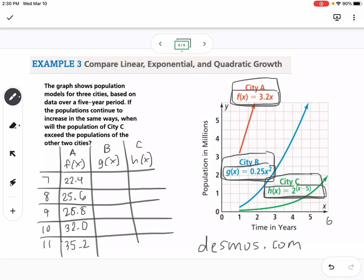Then I would go to city B, which I would type in 0.25 into my calculator, 0.25 times the value like 7 squared. So I get 12.25, then 16.0, 20.25, 25, and 30.25.